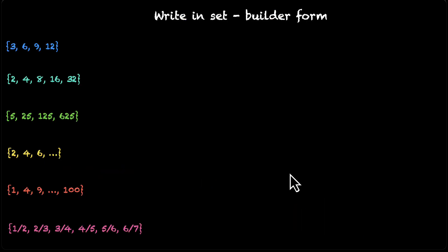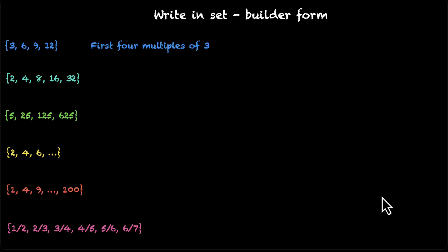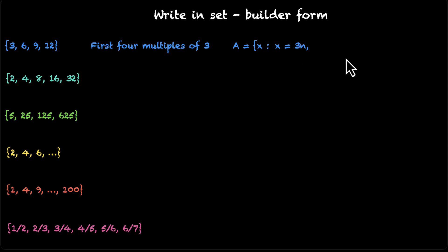So with this recap, let's go back to our answers and start writing the questions. Let's look at the first one: 3, 6, 9, and 12. What do they have in common? Well, they are all multiples of 3. In fact, they are the first 4 multiples of 3. So we are looking for all x such that x is a multiple of 3, which is x equals 3n, and this n, because we are looking for the first 4 multiples, is less than or equal to 4. Also, n is a natural number.